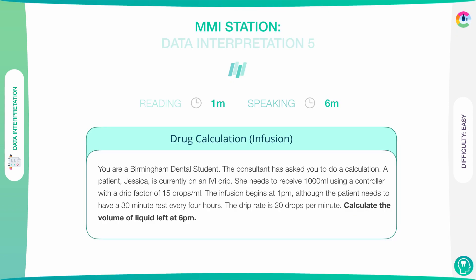Again, try and do this one within the time allocated — you'll get more out of it that way. You are a Birmingham dental student and the consultant has asked you to do a calculation. A patient, Jessica, is currently on an IV drip. She needs to receive 1,000 millilitres using a controller with a drip factor of 15 drops per ml. The infusion begins at 1pm, although the patient needs to have a 30-minute rest over every 4 hours. The drip rate is 20 drops per minute. Calculate the volume of liquid left at 6pm.